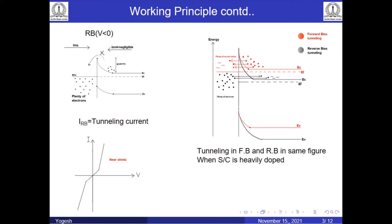Now if the semiconductor is heavily doped, the barrier width will be reduced and electrons have a higher probability of tunneling. We have shown both forward bias and reverse bias in the same plot — the red one is forward bias and black shows reverse bias. In the case of forward bias, barrier height is reduced; electrons can jump over this barrier but also tunnel through this reduced barrier width easily. Similarly in reverse bias, since the width is reduced, electrons tunnel from metal to semiconductor. In both cases the current is almost the same. This contact is called the near-ohmic contact and the IV characteristics will be sub-linear.